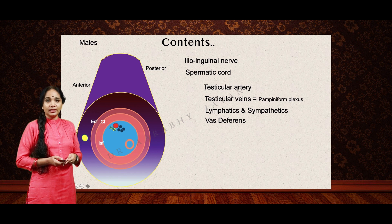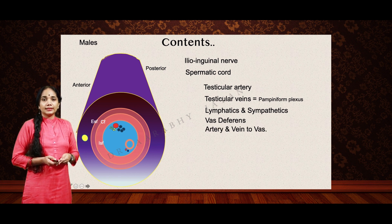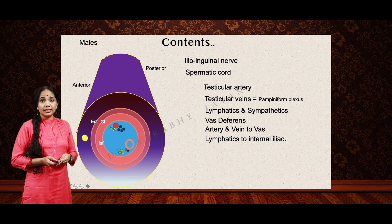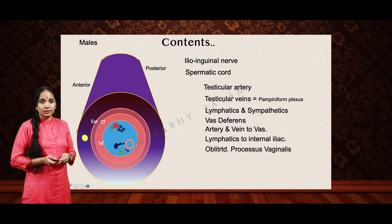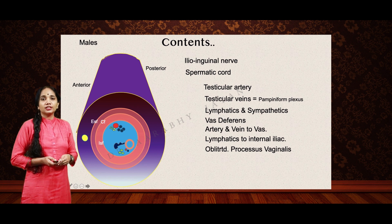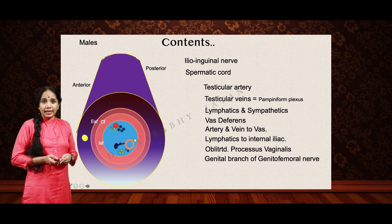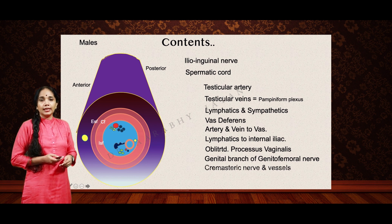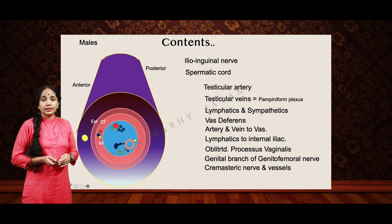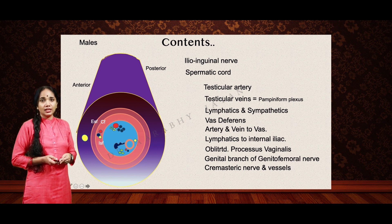Also present are the vas deferens, as well as the artery and vein to the vas deferens, the lymphatics to the internal iliac, and the obliterated processus vaginalis. One more thing: we have the genital branch of the genitofemoral nerve close to the vas, and the cremasteric vessels and nerves which lie between the internal spermatic fascia and the cremasteric fascia coverings of the inguinal canal.